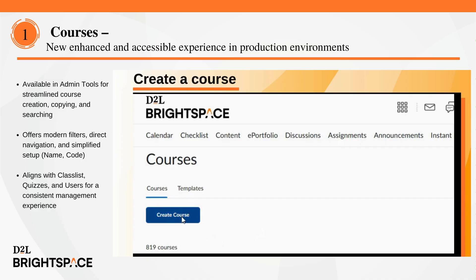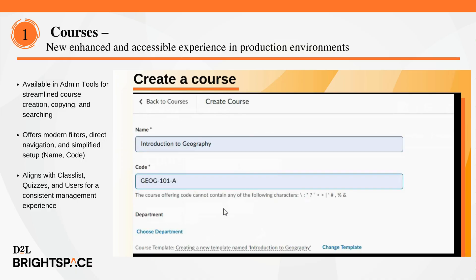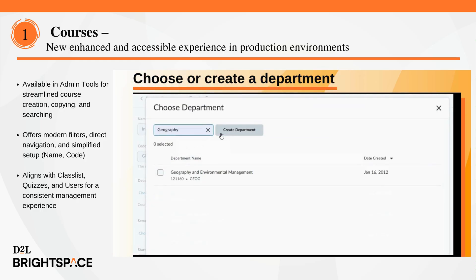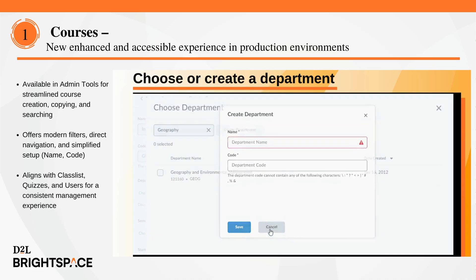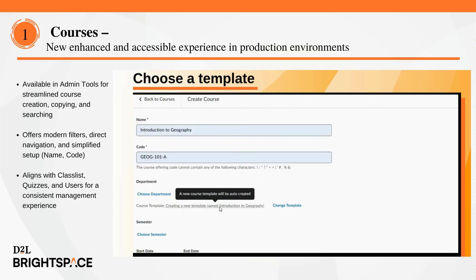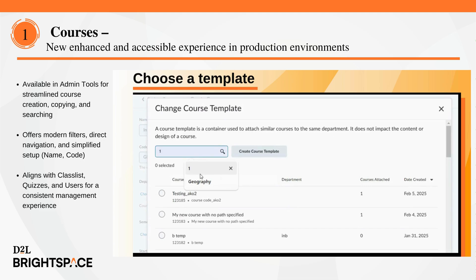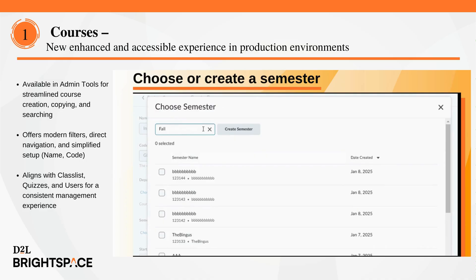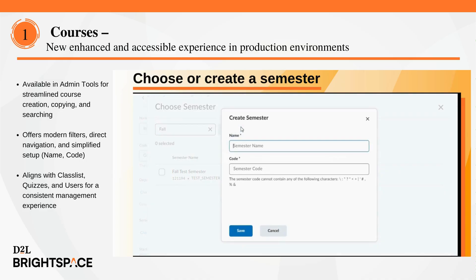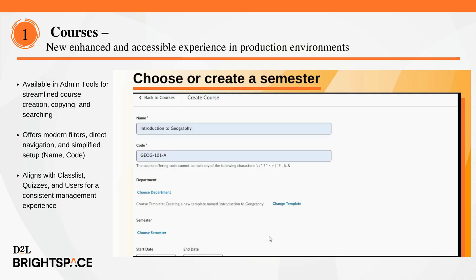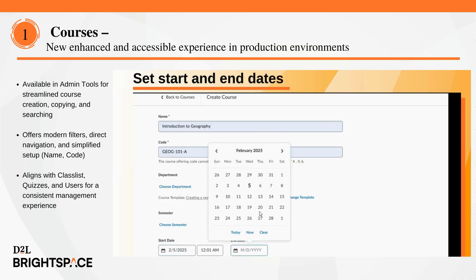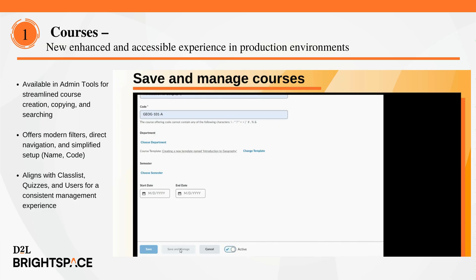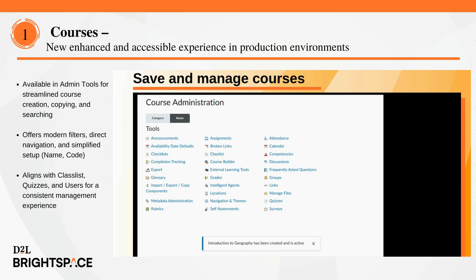This month Brightspace introduces the new courses tool in production environments, offering a streamlined and accessible experience for creating, copying, and searching for courses and course templates. Located in admin tools, the new courses tool enables users to search for courses using modern filters, create courses by completing required fields such as name and code, and optionally navigate directly to the course admin page of a course. This functionality features a consistent layout and workflows that align with class list, quizzes, and users for faster course management.